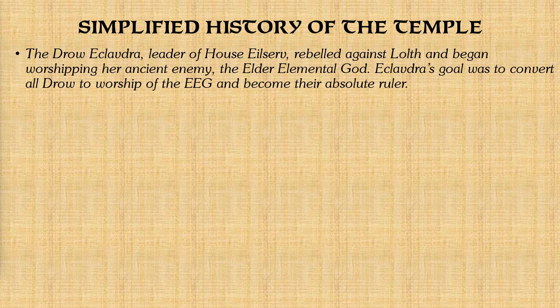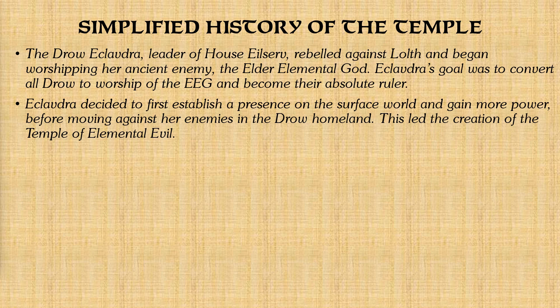Starting with drow Eclavdra — and I'm going to say 'drow,' that's how we always pronounced it; either pronunciation can be considered correct. Eclavdra, leader of House Eilservs, rebelled against Lolth and began worshipping Lolth's ancient enemy, the Elder Elemental God. Her goal was to convert all drow to the worship of the Elder Elemental God and become their absolute ruler. She decided to establish a presence on the surface world and gain more power before moving against her enemies, which led to her creation of the Temple of Elemental Evil.